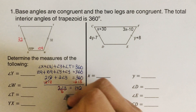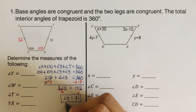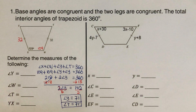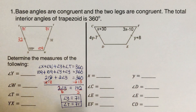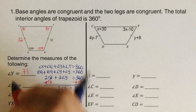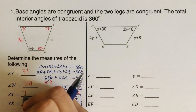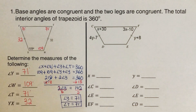Since angle Y equals angle T, angle T is also 71 degrees. So angle Y is 71°, angle W is 109°, angle T is 71°, and XY is 32. At this time, I encourage you to pause the video and try the next problem on your own.